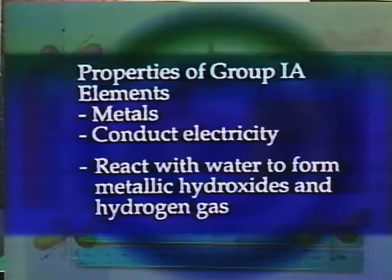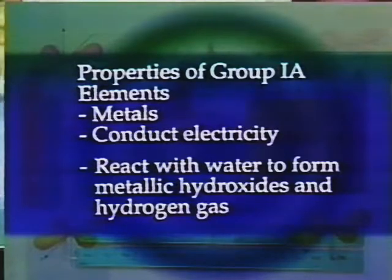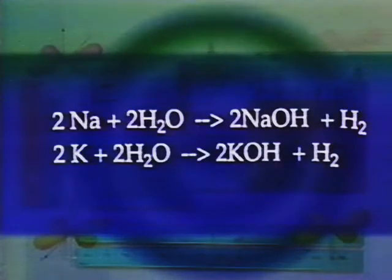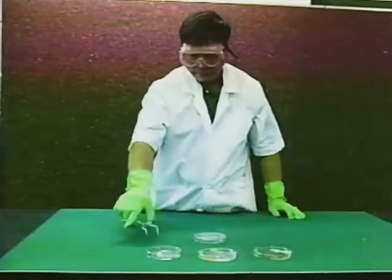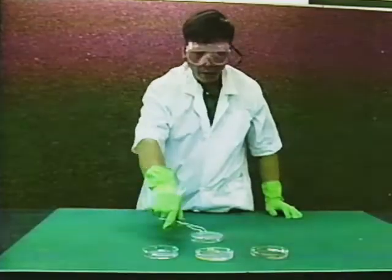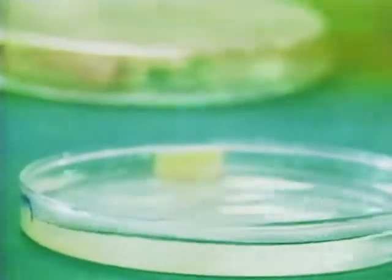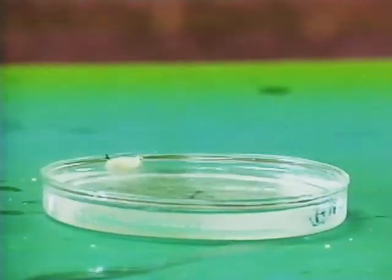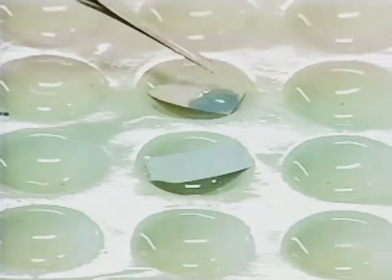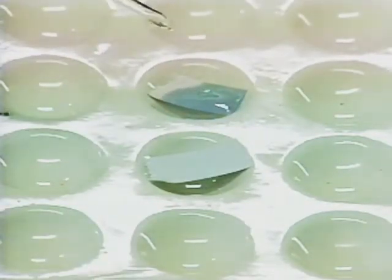Sodium and potassium both react with water to form a hydroxide and hydrogen gas. Sodium hydroxide and potassium hydroxide are formed in their reactions. The reaction of sodium with water is a violent exothermic one. That of potassium is even more so; therefore, we say that potassium is more reactive to water than sodium. The resulting solutions are basic, turning red litmus paper to blue.